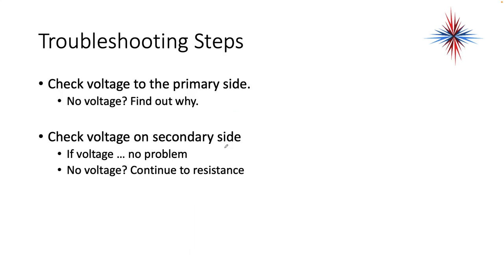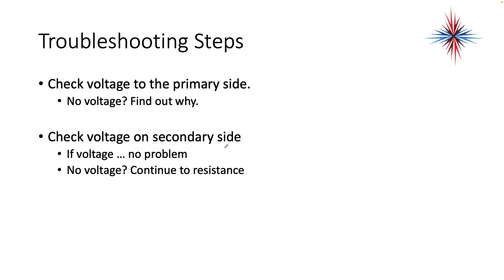Troubleshooting steps for transformers are actually pretty easy. Check voltage to the primary side — if you don't have voltage coming to the transformer, find out why. No sense going further if you don't have voltage. Check voltage on the secondary side; if you have voltage, there's no problem with the transformer. If no voltage, lock out and tag out the system and isolate the transformer primary — disconnect it from the rest of the circuit. Check the resistance of the primary winding: if O-L or infinite, the winding is open; if zero, the winding is shorted. Either way, you have a bad transformer.